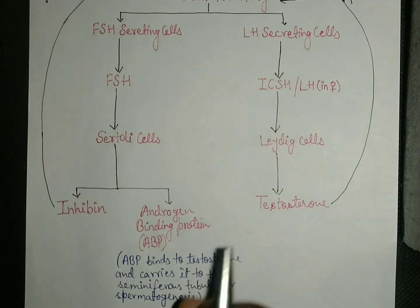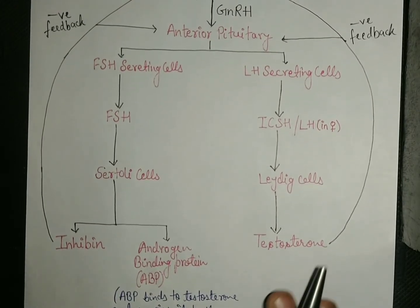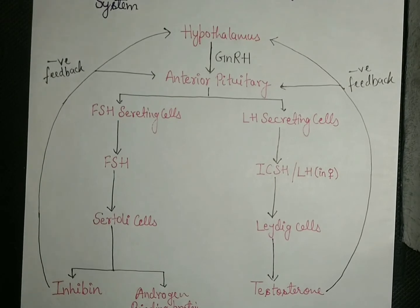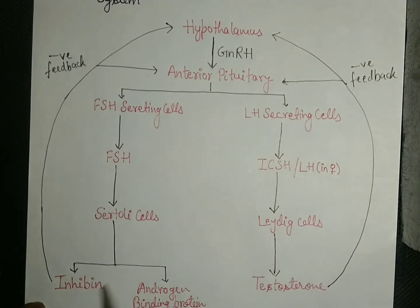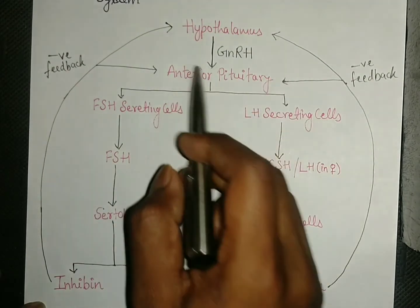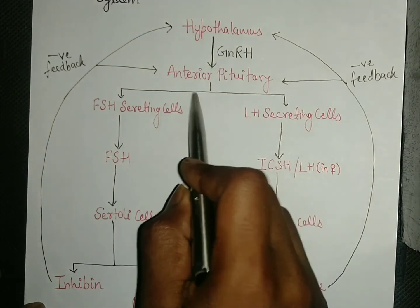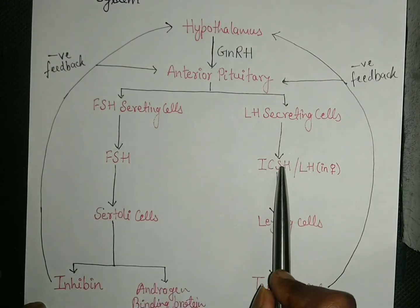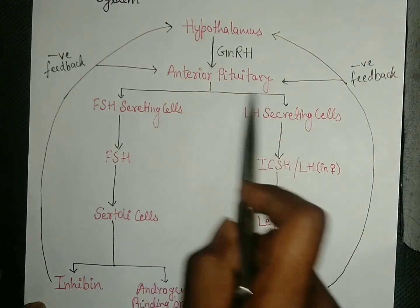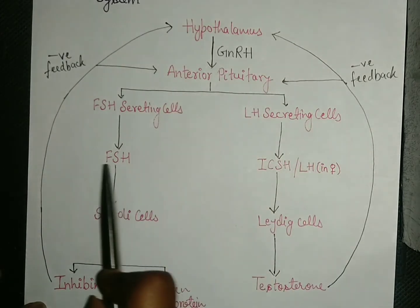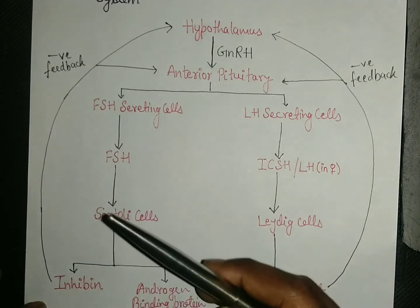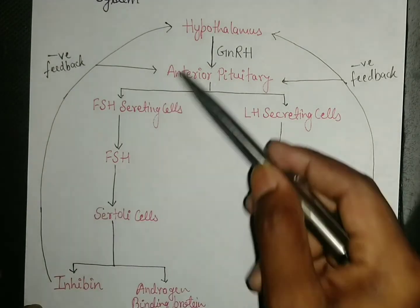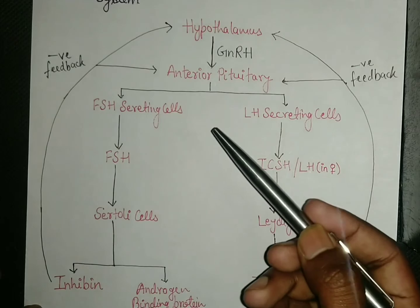When the sperm count reaches a certain limit, inhibin and testosterone provide negative feedback. They act on the hypothalamus and pituitary gland and cause FSH and ICSH release to pause. This means their functions are halted for some time, and no further FSH and ICSH is released. After some time, this whole cycle repeats.